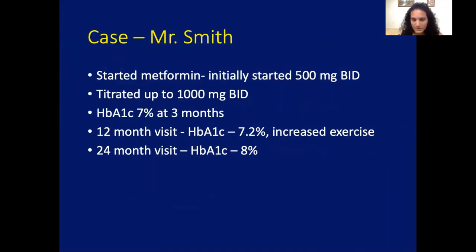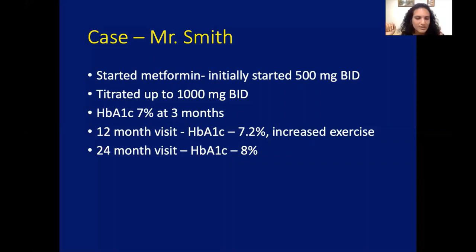So you started him on metformin, started at 500 mg, went up to BID, titrated to 1,000 mg BID. His A1C was great — we reached our goal. He comes back at 12 months and his A1C goes up a little bit to 7.2. He says he'll increase exercise. You see him back at 24 months and his A1C is 8 — he's had hyperglycemia on top of metformin monotherapy.